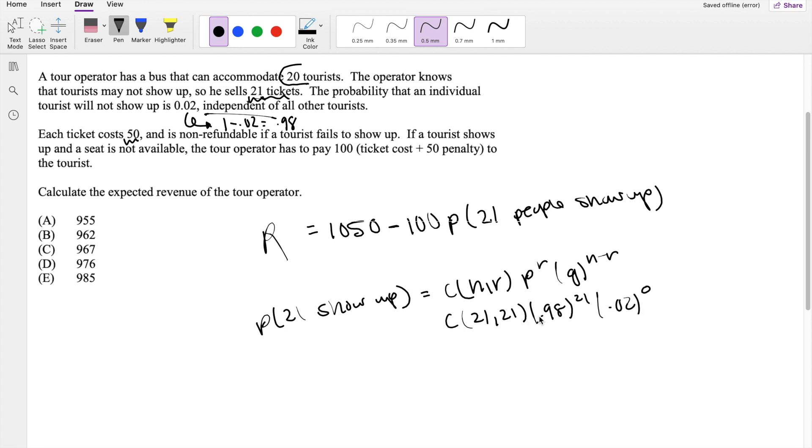So then this is equal to 1, and this is also equal to 1. So you're left with 1050 minus 100 times the probability that 21 show up, which is 0.98 to the 21st power. So this is approximately equal to 984.57, which is indeed approximately equal to 985, our answer E.